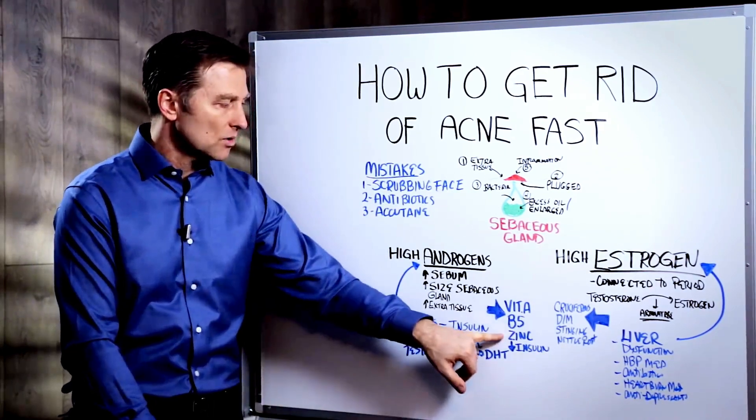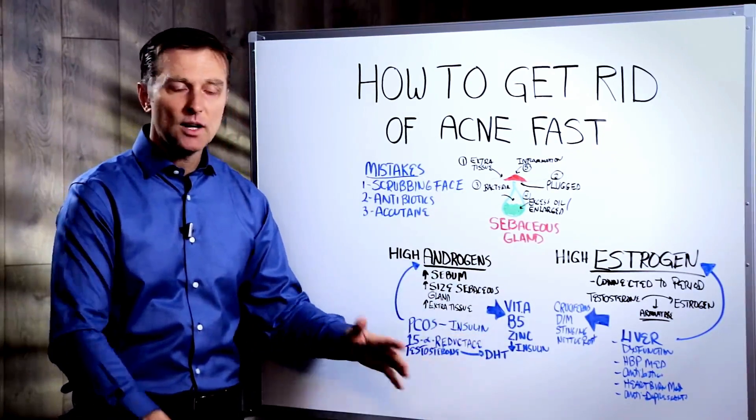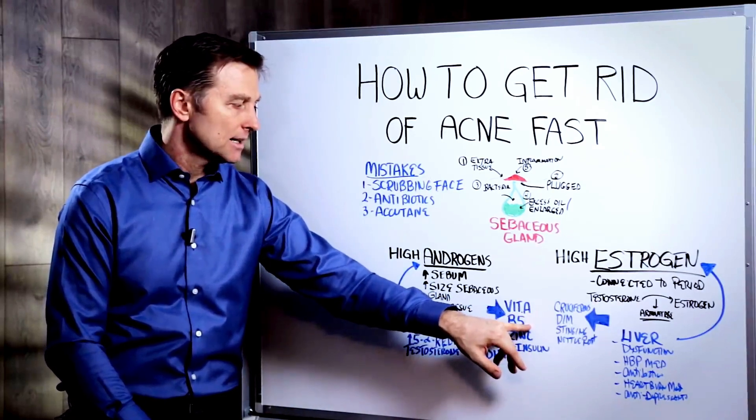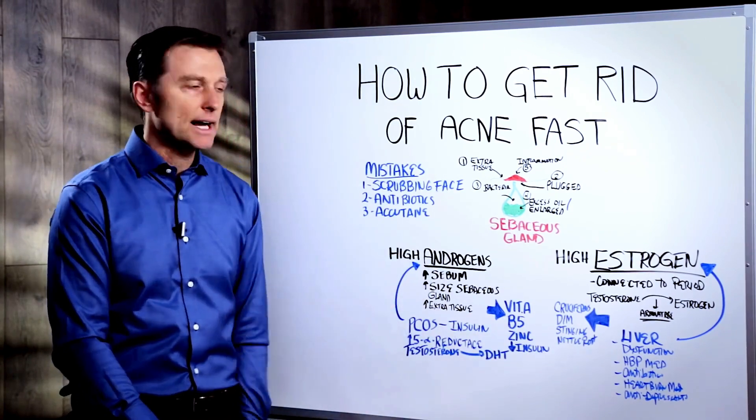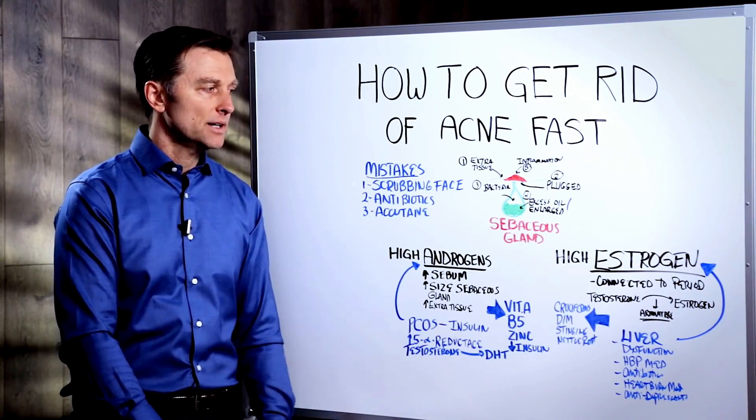Zinc is very, very powerful for getting rid of acne because it lowers this enzyme. So we have lowering the insulin, adding vitamin A and cod liver oil and also increasing B5 and zinc. Those are the things that I would do if I had acne right now. I wish I would have known about this in high school because I would have done this. It would have cleared things up very nicely.